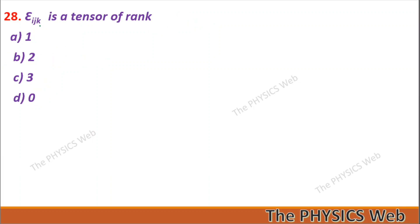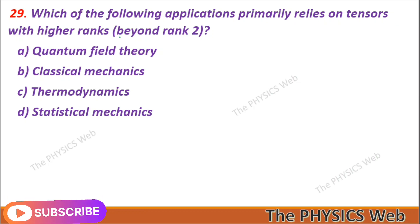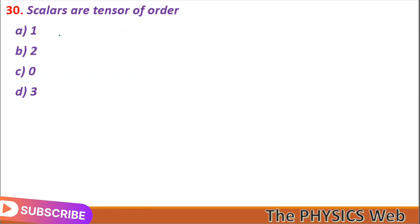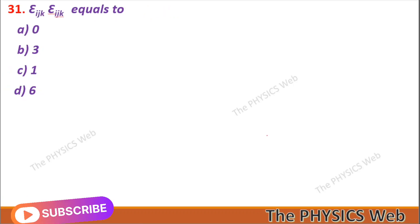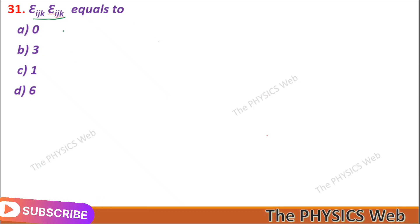Question 28: ε_ijk is a tensor of rank 3 — so C is your correct option. Question 29: Among the given applications, the one that primarily relies on tensors of higher rank is quantum field theory — so A is your correct option. Question 30: Scalars are tensors of order 0 — so C is your correct option. Question 31: ε_ijk ε_ijk — using the relation from the previous question, this equals 6 — so D is your correct option.